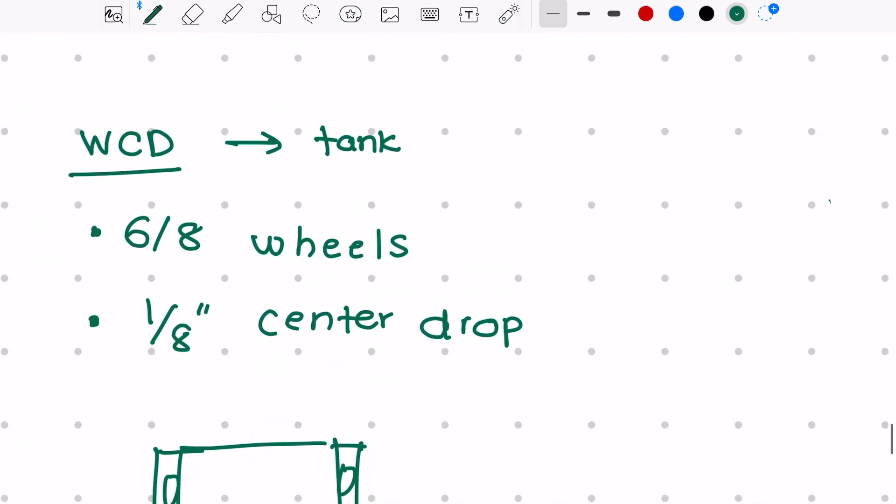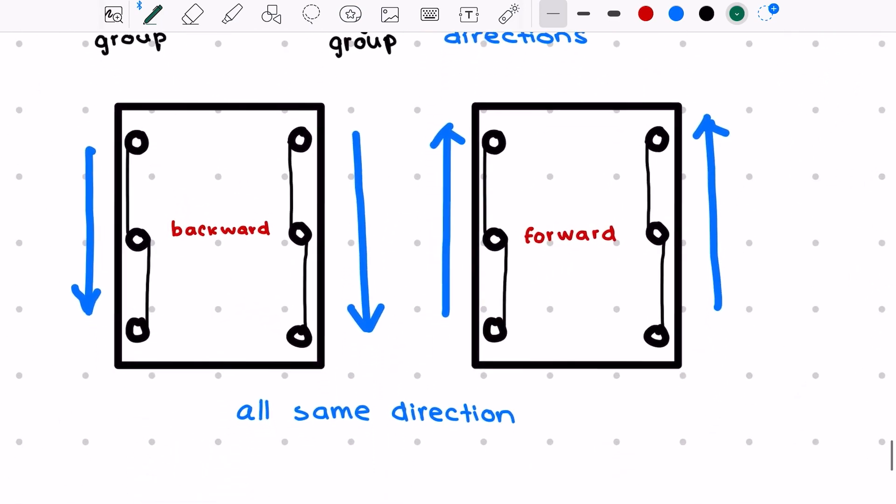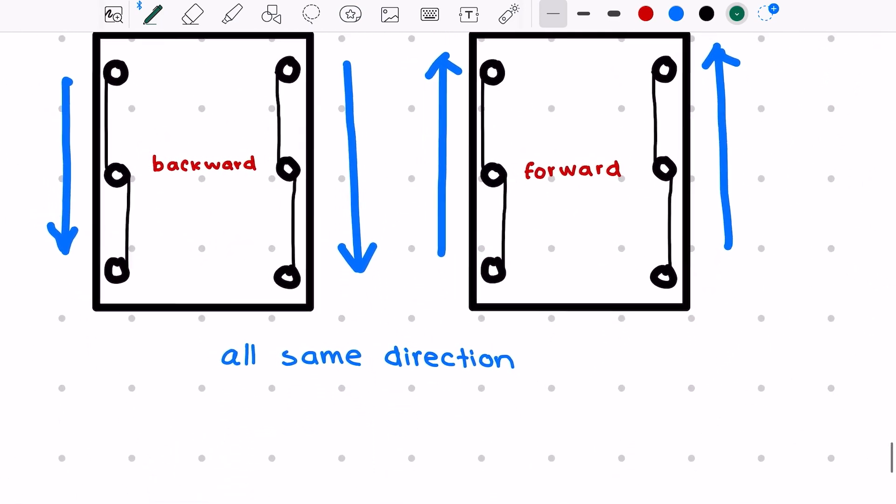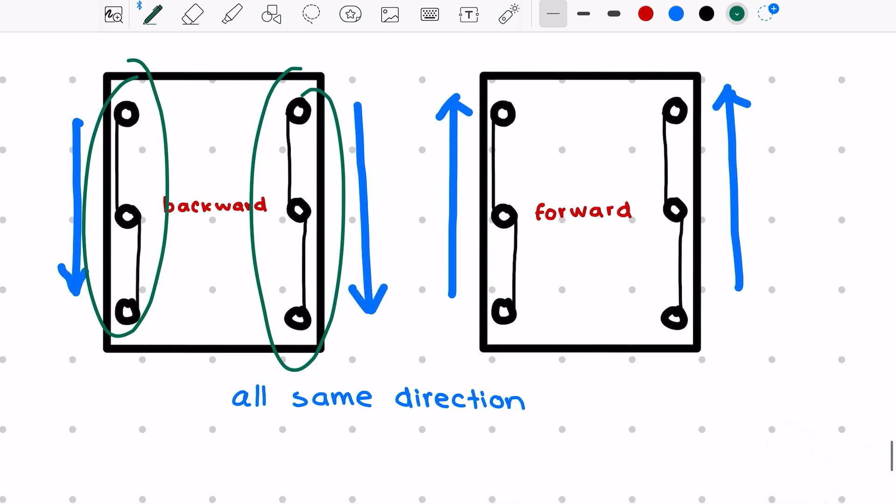Now I mentioned that it is a type of tank drive base. In order to fully understand why a West Coast Drive Base has this one-eighth of an inch center drop, it's important to understand what a tank drive base is. This is something that most of you should be familiar with. It's basically where there is a left set of wheels and a right set of wheels. And you can control the individual wheel groups, direction, and speed to control the overall robot's direction, speed, and turning.